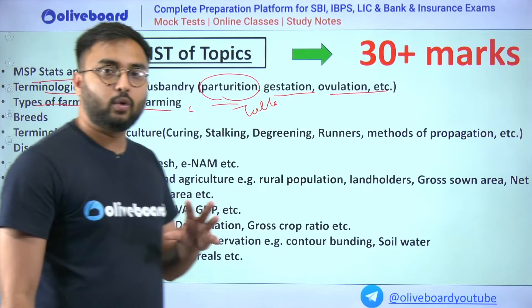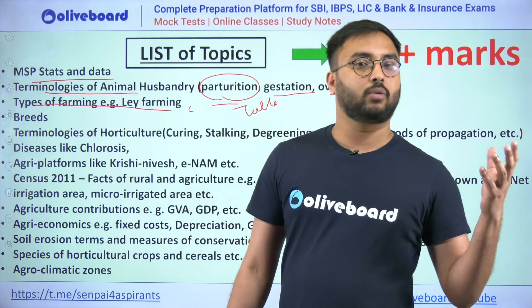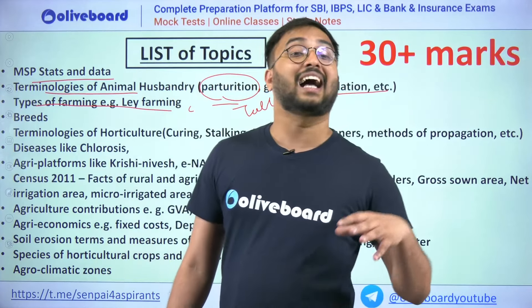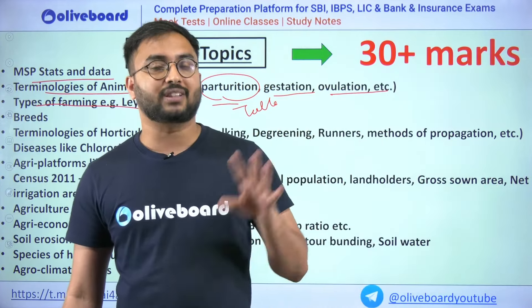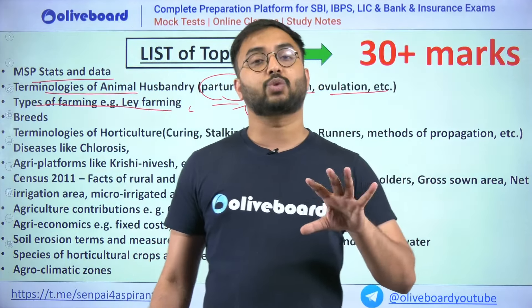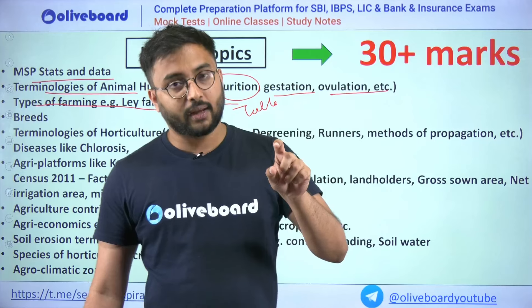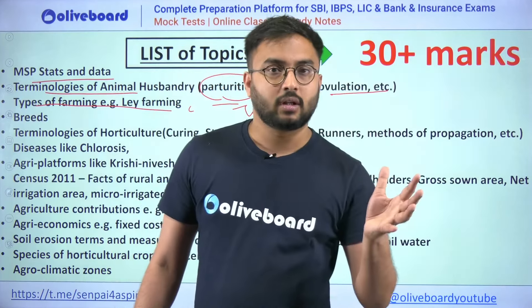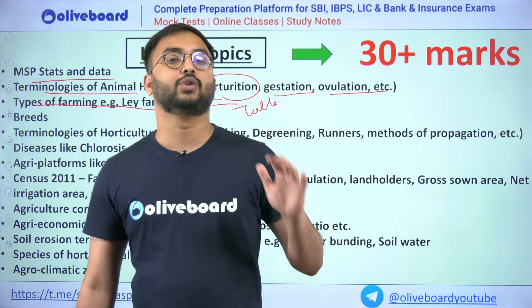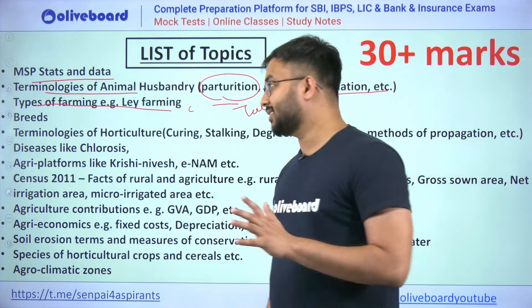For breeds across animal husbandry, fisheries, poultry, cattle, and buffalos, questions can be asked at various depths. For example: which variety belongs to which animal? Why is the color of Kadaknath chicken black? For any animal breed, know its characteristics, features, which area it is found in, common names, physical appearance, associated diseases, and even milk capacity in the context of cattle and buffalos. Make comprehensive notes on all breeds.